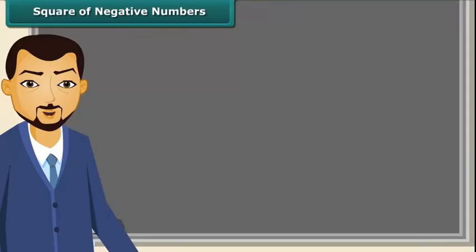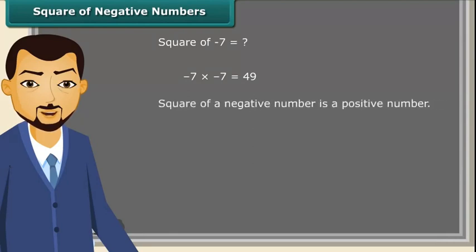Can we think of the square of a negative number? Yes, why not — negative numbers can also be squared. When we square a negative number, we get a positive number. Suppose we have both the same positive and negative number; if we square both of them, the result will be the same. That was a really interesting thing to know.